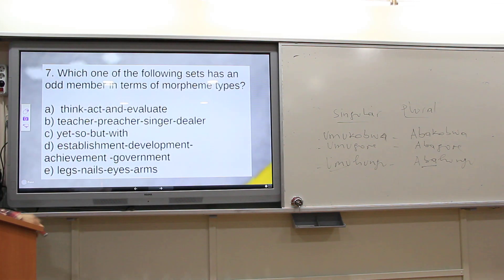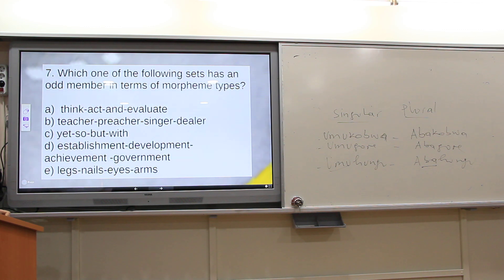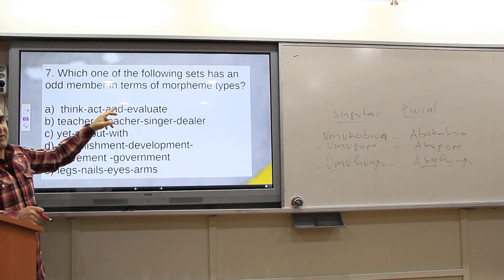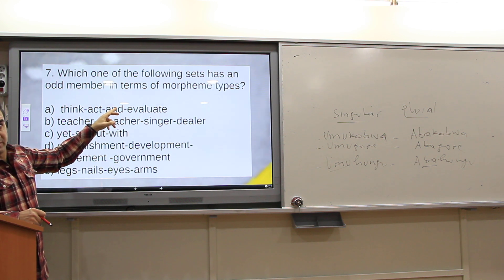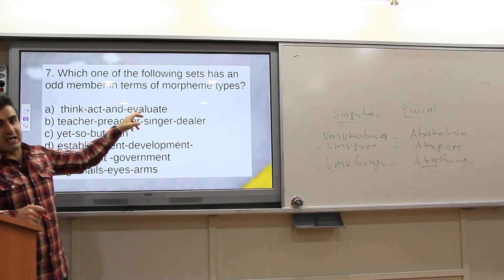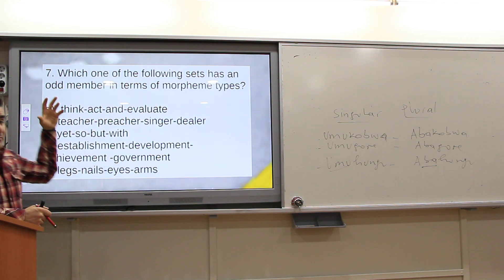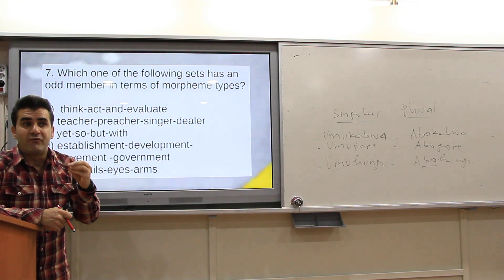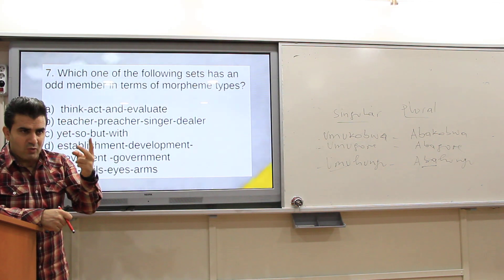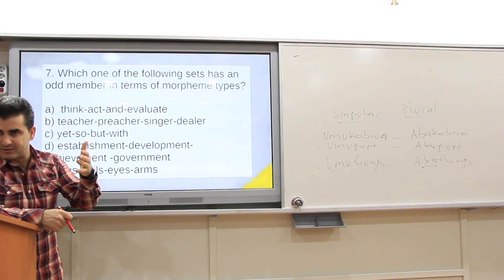Which of the following sets has the same number of morphemes: think, act, and evaluate? The correct answer is A. Because one is free/functional, and the others are functional and lexical — but both are free morphemes; one is functional and the rest are lexical.